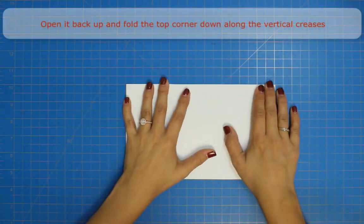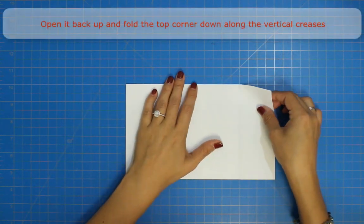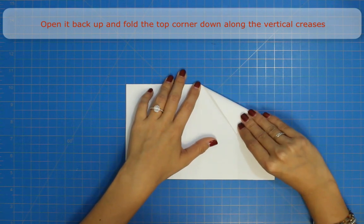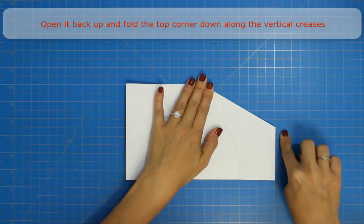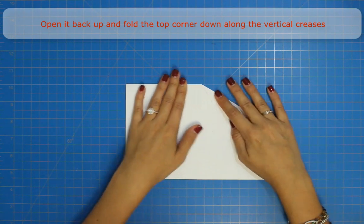Open it back up and fold the top corner down along the vertical crease. And then repeat with the other side.